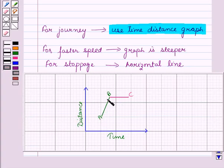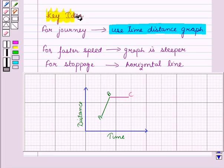Now here you can see line segment AB is steeper, which represents faster speed. And line segment BC is horizontal, which represents stoppage. Now these results will work out as a key idea for solving the given question. Now let us start with the solution.